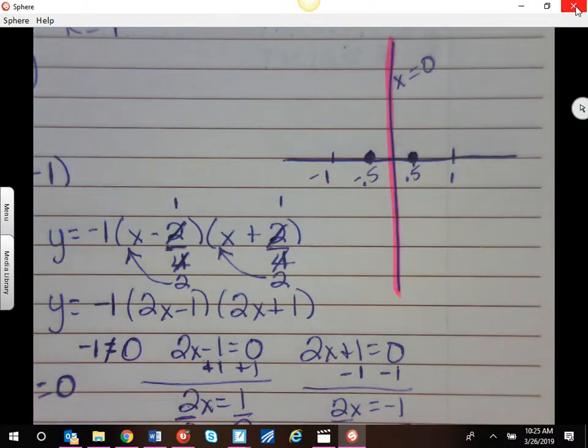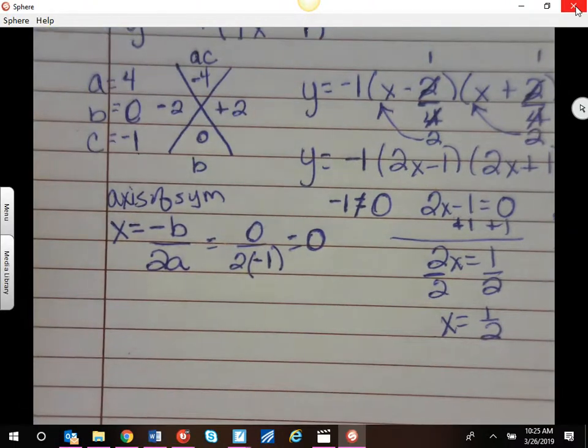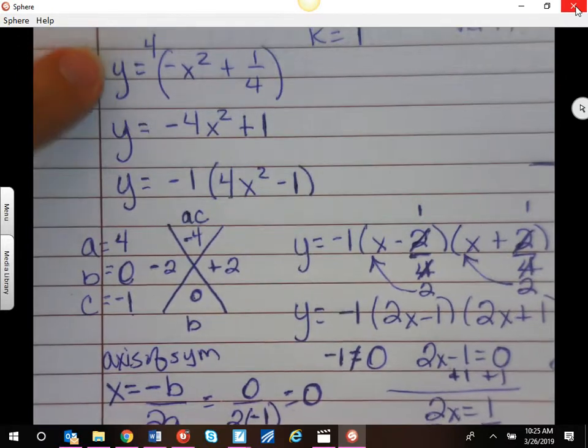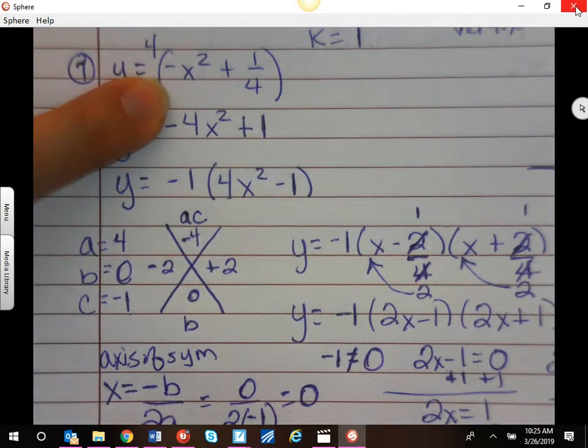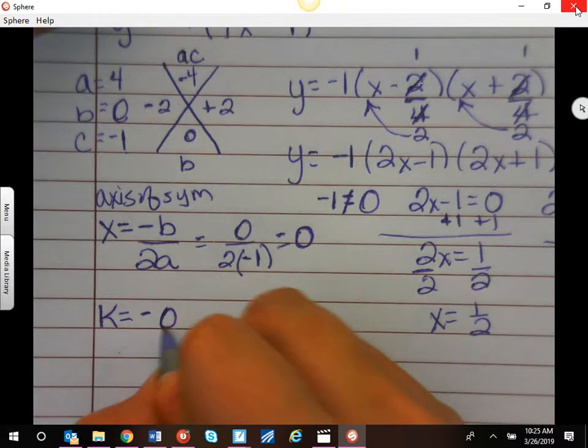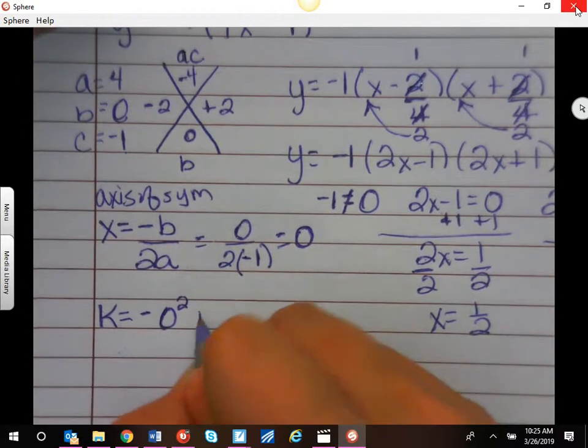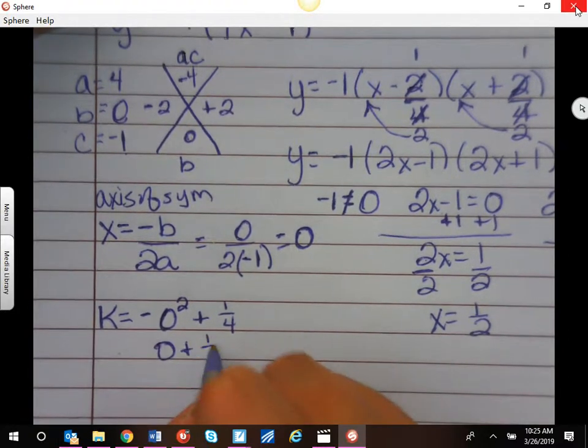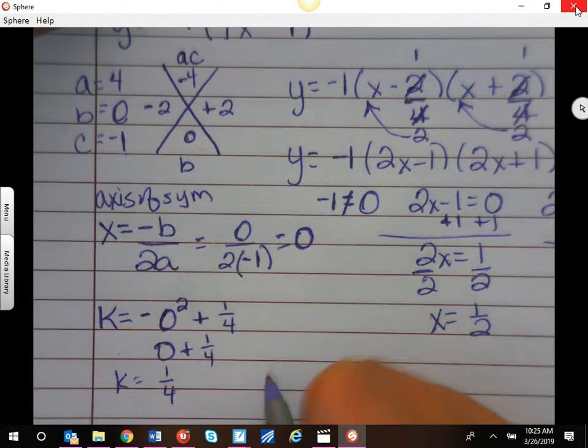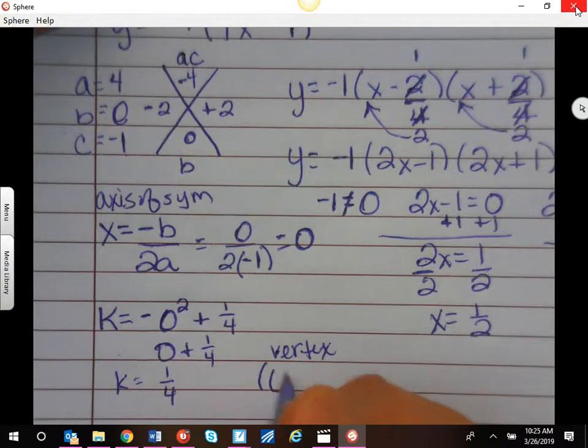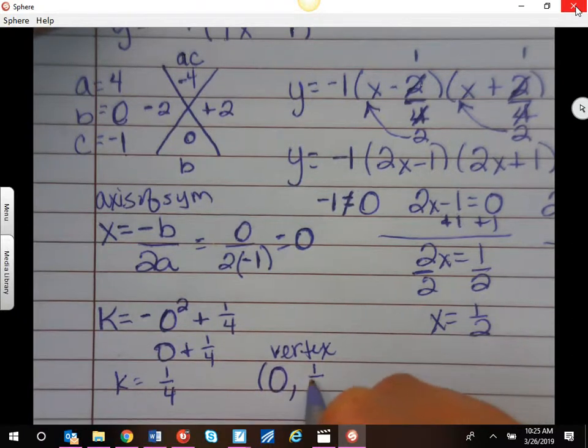So now we can plug it in, and we're going to find our k, and now when we plug it in, we want to go back to our original. So I have negative, and then x squared, well, x is 0, 0 squared is just 0, plus 1 fourth. Well, 0 plus 1 fourth is just 1 fourth. So my vertex is going to be 0, and 1 fourth.